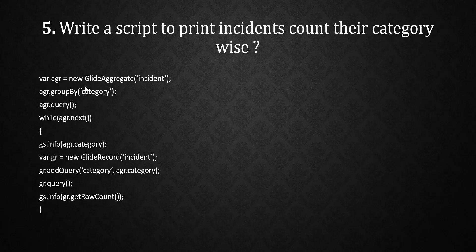We create one GlideAggregate object, then we use group by on it, then we run the query. After that we print all the categories — whatever incident categories are there. Then we query the incident table again, passing all those categories retrieved from the GlideAggregate object, and query it again. Whatever results we get, we use the getRowCount function and then print the count.